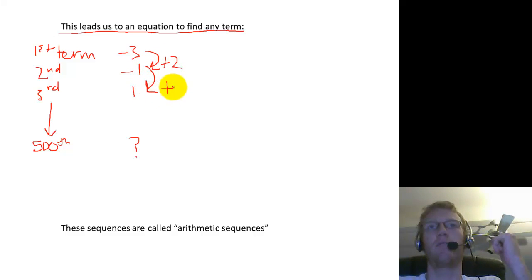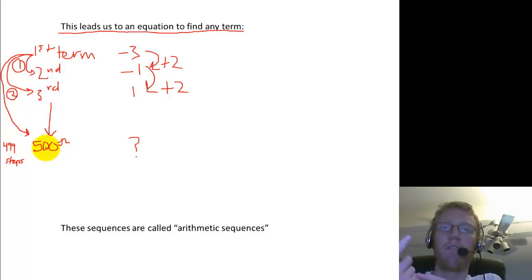Then, to get from the second and third, I had to add 2 again. So this was one step. From here to here would be 2 steps forward. So how many steps forward is it going to be to go all the way to the 500th term? Well, you can see right away, the number of steps forward is 1 less than the term number. The number of steps forward here is only 1 step forward to get to term 2, 2 steps forward to get to term 3. So it should make sense that it's 499 steps to get to the 500th term. The reason it's 1 less is because you already have the first term. So you're only taking 499 more steps to get to the 500th term.